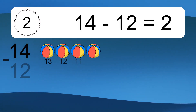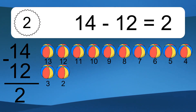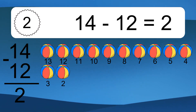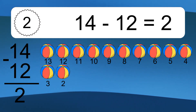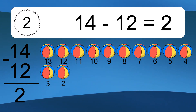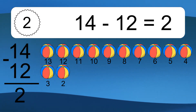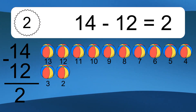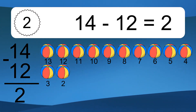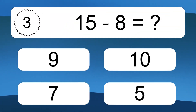14 minus 12 equals what? 14 minus 12 equals 2. Let's count it: 13, 12, 11, 10, 9, 8, 7, 6, 5, 4, 3, 2. 15 minus 8 equals what?